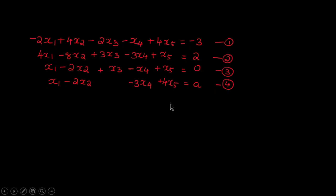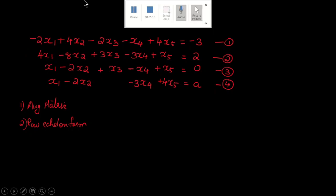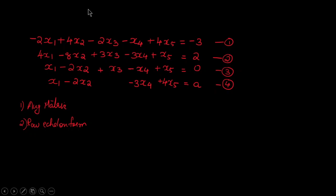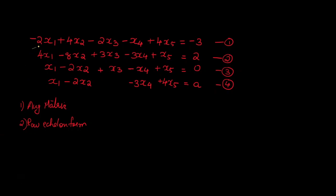As we did in the last session, we have to find the augmented matrix and then reduce it into row echelon form. To find the augmented matrix, we take out the coefficients and make it a matrix. When you consider the first equation, the coefficients 2, 4, minus 2, minus 1, and 4 will be the first row.